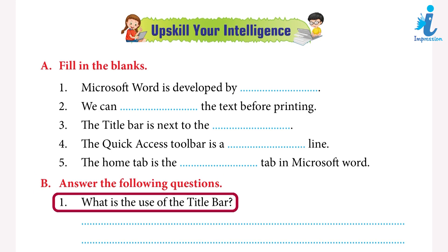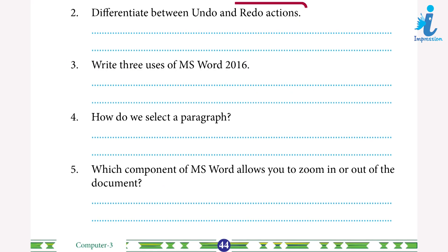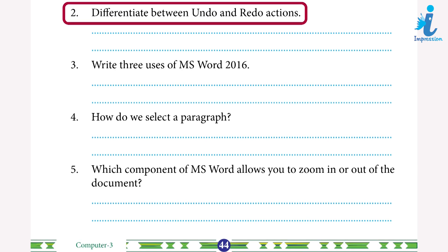Answer the following questions: one, what is the use of the title bar? Answer: the title bar is next to the Quick Access Toolbar; it shows the name of the document which is opened. By default, the name of any new document is Document 1. Two, differentiate between undo and redo actions.